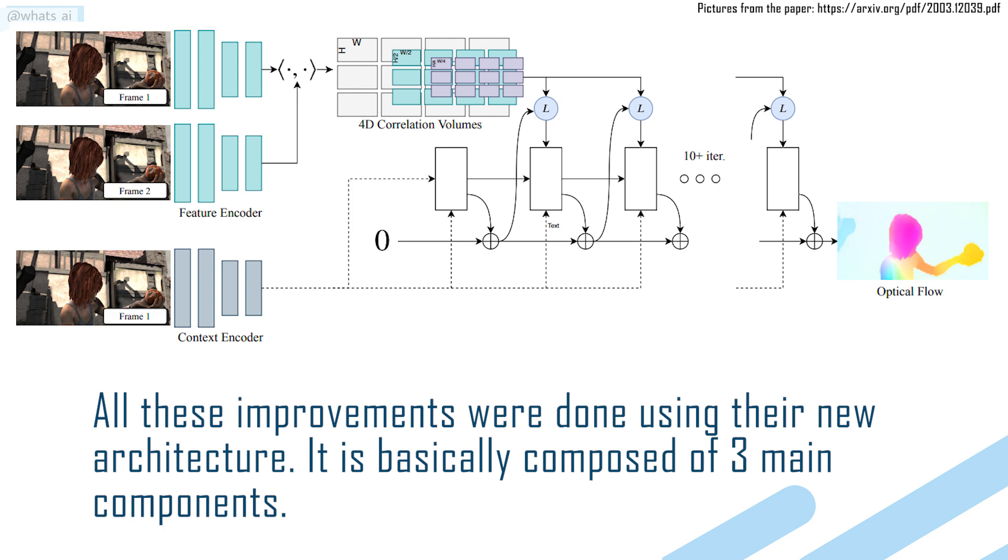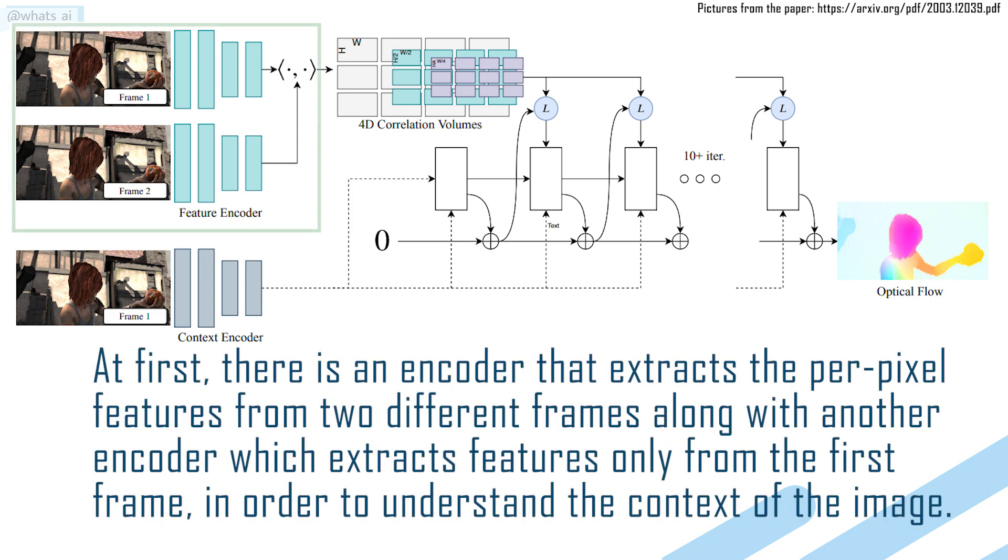It is basically composed of three main components. At first, there is an encoder that extracts the per-pixel features from two different frames, along with another encoder which extracts features only from the first frame, in order to understand the context of the image.